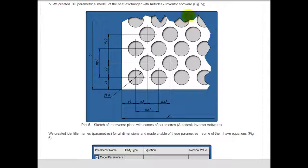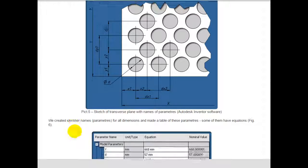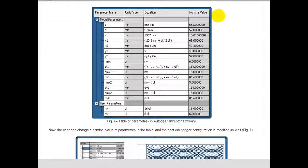You can see a sketch of the transverse plane with names of parameters. We also created a table of these parameters. The main parameters are diameter of tube and number of tubes. The first is number x and the second is number y.